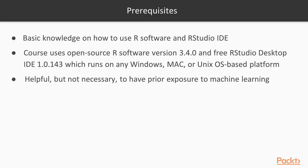To succeed in this course, it's necessary to have some basic knowledge of how to use R software and the RStudio IDE. This course uses open source R software version 3.4.0 and the free RStudio desktop IDE 1.0.143, which runs on any Windows, Mac, or Unix operating system-based platform. It's also helpful but not necessary to have some prior exposure to machine learning.